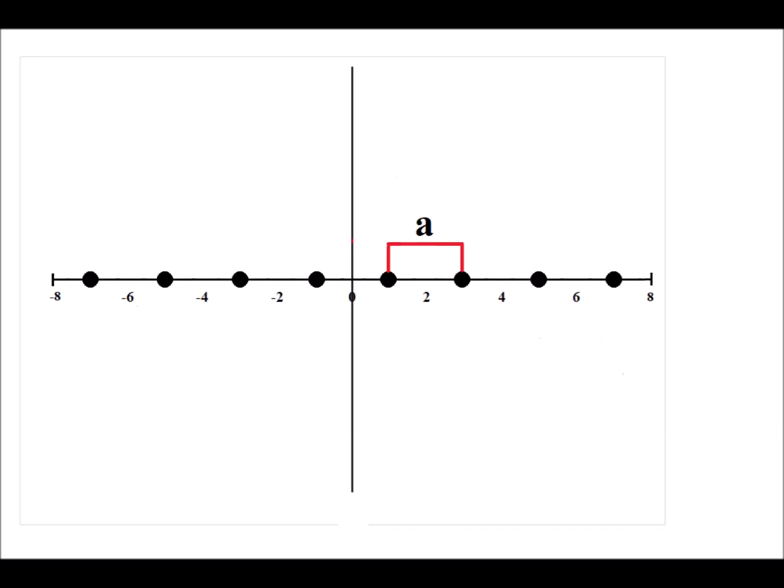Here is a sketch of our repeating lattice. We have 8 atoms. The atoms happen to be at the positions minus 7, minus 5, minus 3, minus 1, 1, 3, 5, and 7 angstroms. So our interatomic distance, our lattice distance a, is 2 angstroms.